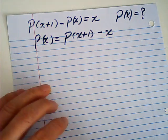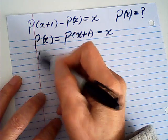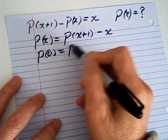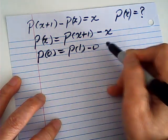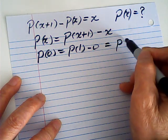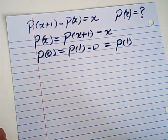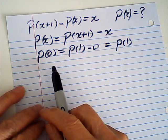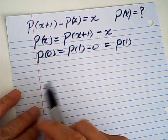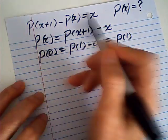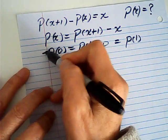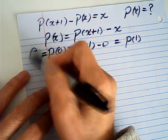From which we know that P(0) is P(1) minus 0, which is equal to P(1). And we know that P(0) is the y-intercept, it's constant. So it is a fixed number, C.